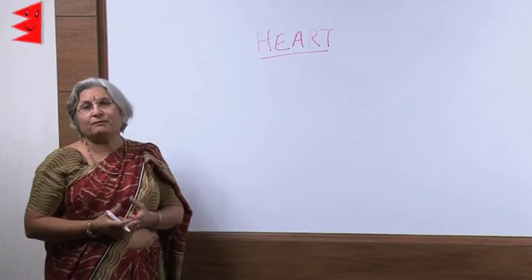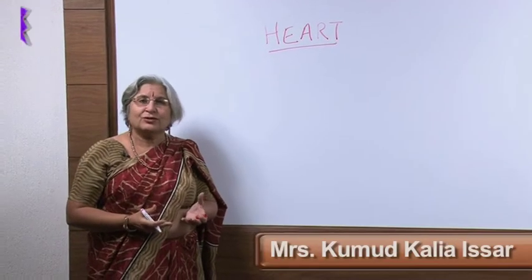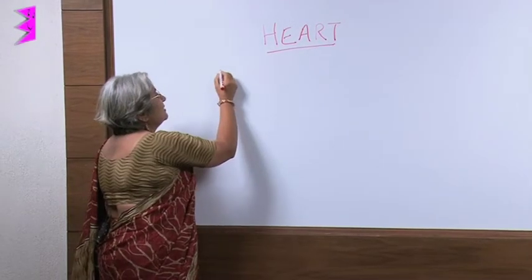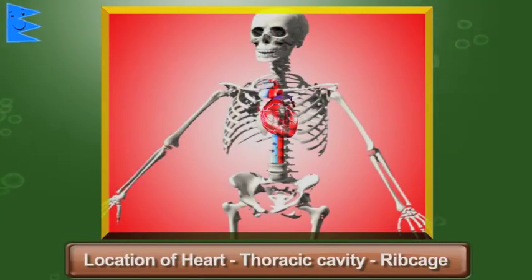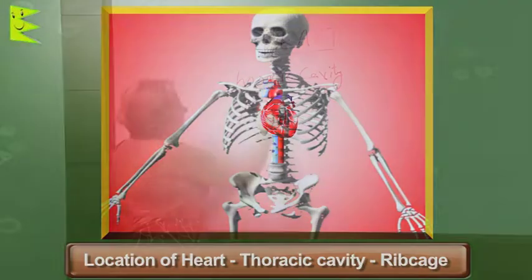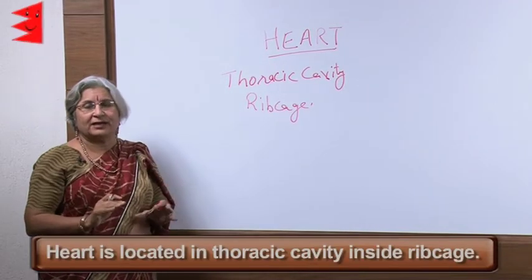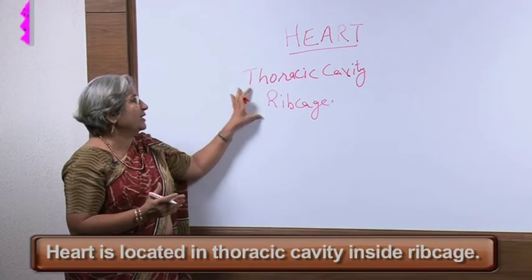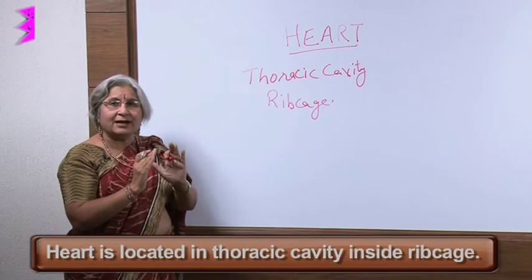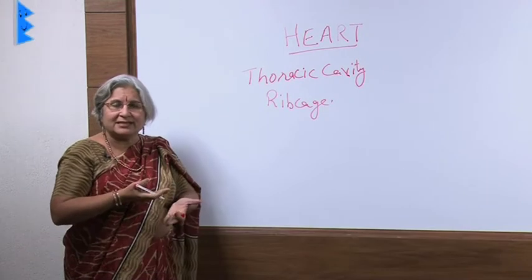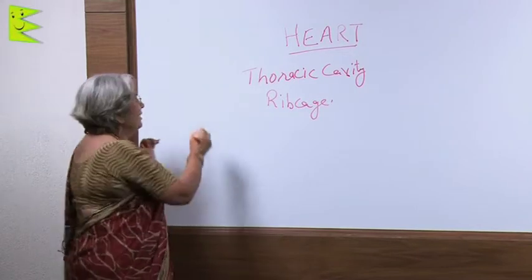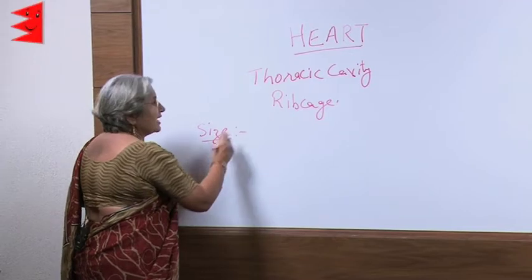The heart is a very important and very delicate organ, so obviously it has to be well protected. If we see where it is located, we find it is in the thoracic cavity, well inside the rib cage. All vital organs of our body are protected by some part of the skeleton — the brain is protected by the cranium, the heart is protected by the rib cage. The heart is surrounded by the two lungs and rests just above the diaphragm.